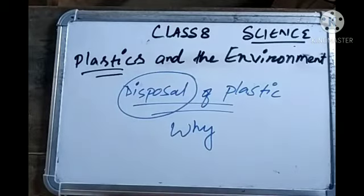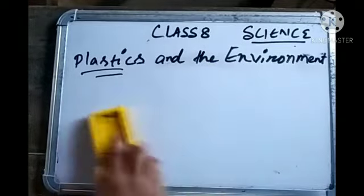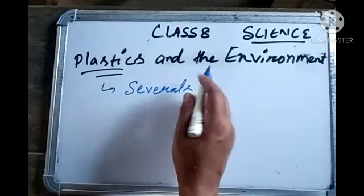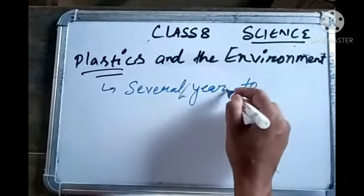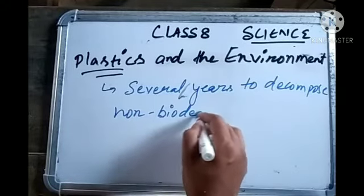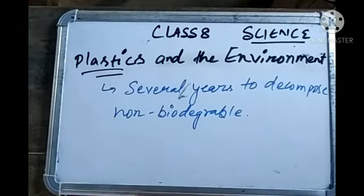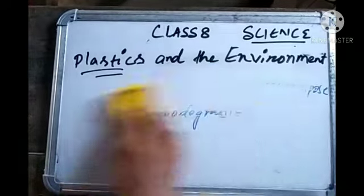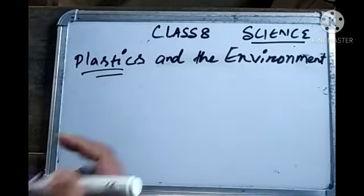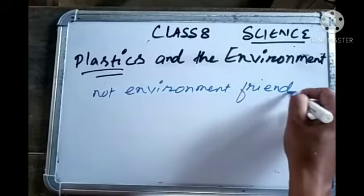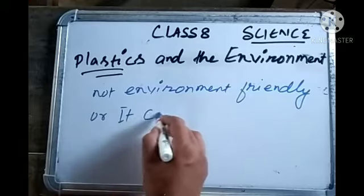The major problem is that plastics take several years to decompose. That means plastics are non-biodegradable. Biodegradable means they decompose through natural processes; non-biodegradable means they do not decompose through natural processes. Plastics are non-biodegradable — that means it takes several years to decompose — that's why plastic is not environment-friendly. You can say it causes environmental pollution.